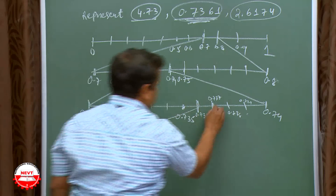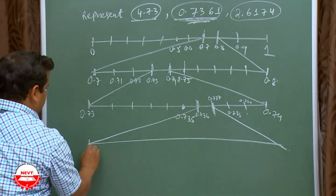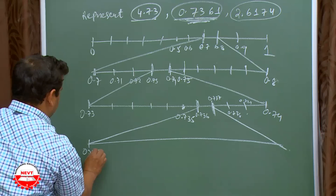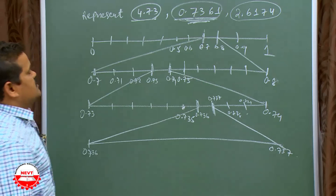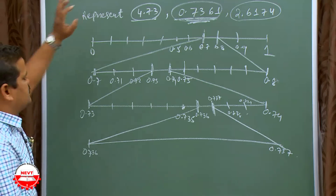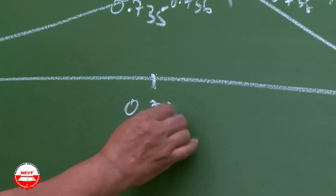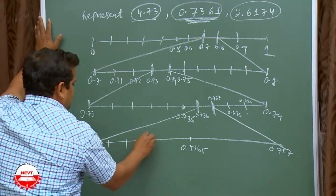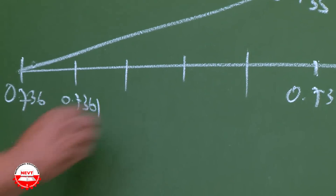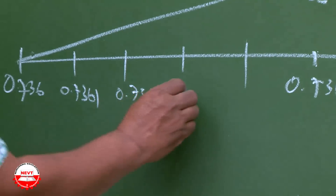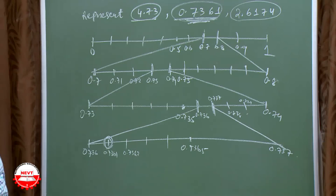So this is 0.736 and this is 0.737. The exact middle is 0.7365. Divide it into 4 equal parts: 0.7361, 0.7362, 0.7363, 0.7364, 0.7365. Your aim is to get 0.7361 — this is the point. So you got the answer.